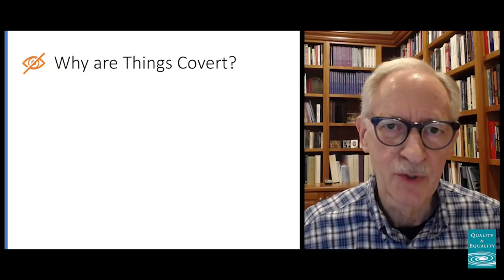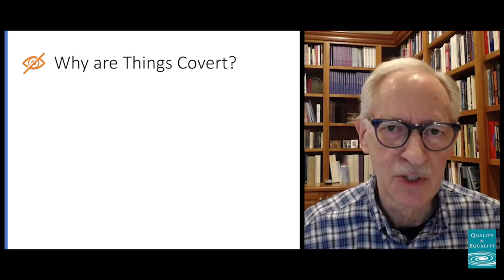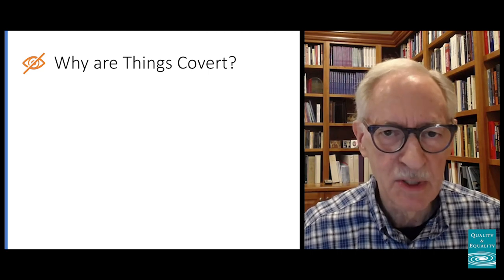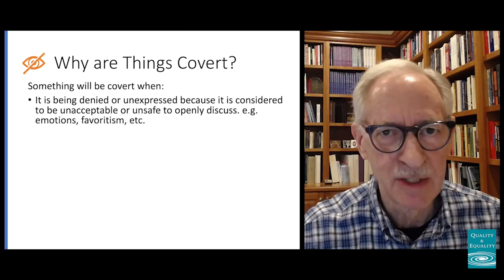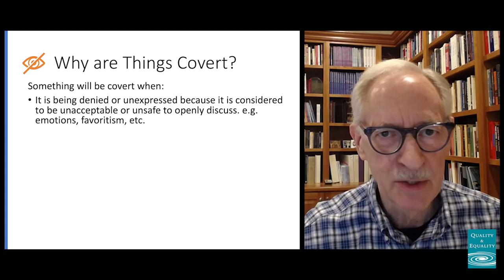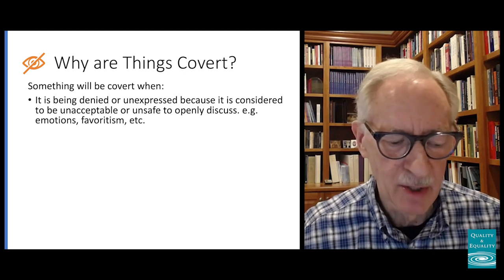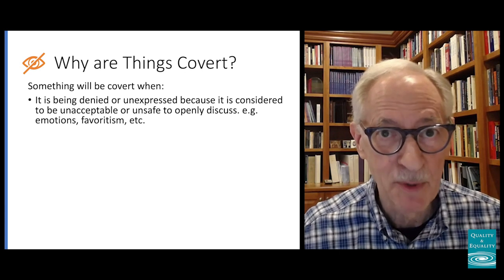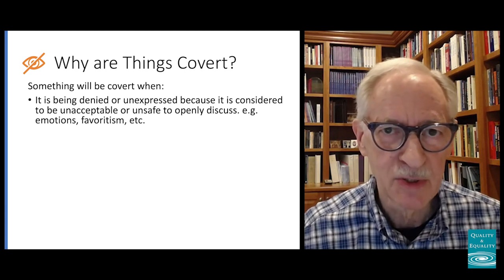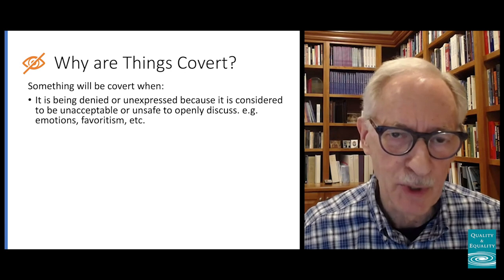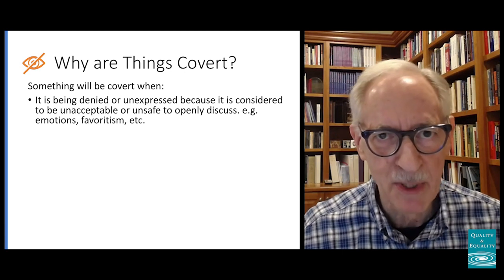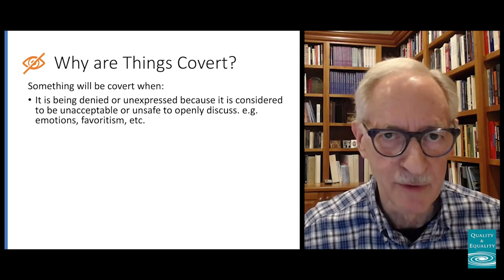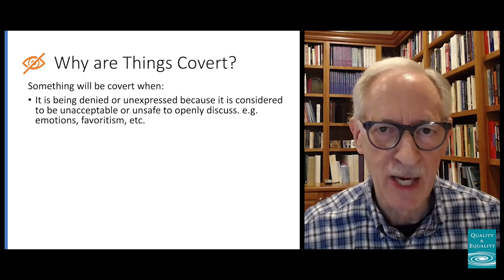Let's get started. Let me begin by saying a little bit about why things are covert, or why things are hidden in organizations. One of the reasons is because people are afraid to say something. They are unexpressed dynamics — denied dynamics — because people are afraid that something will happen to them by expressing it, because it's considered an inappropriate topic, an illegitimate topic, a topic that people don't approve of in some way or another. So people deny it and hide it.